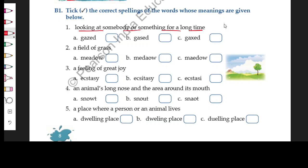You have to decide which spelling is correct. Out of three options, which one has the right spelling? That's what you have to decide. A field of grass is called meadow. A feeling of great joy is called ecstasy.